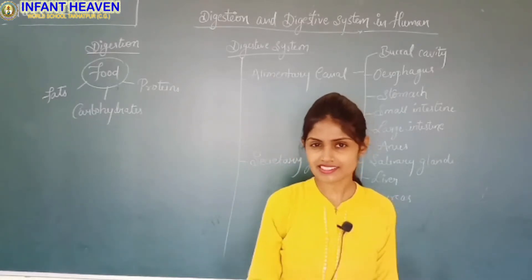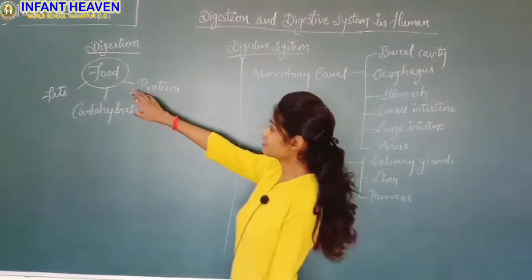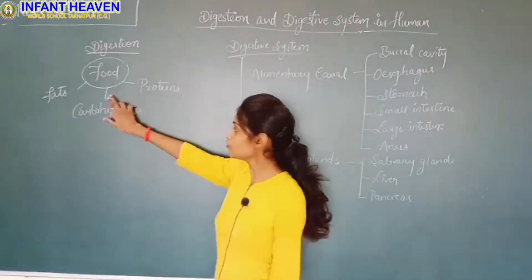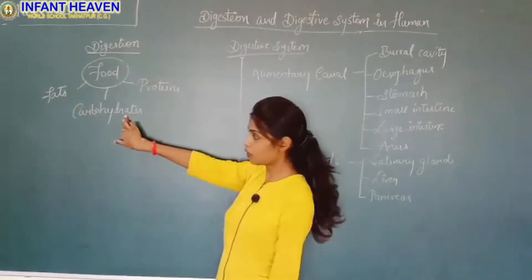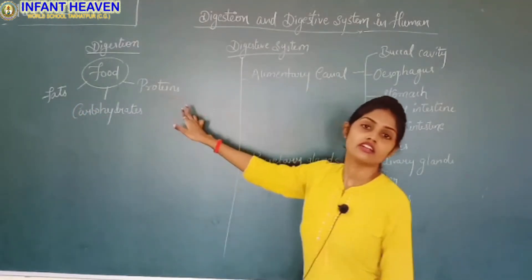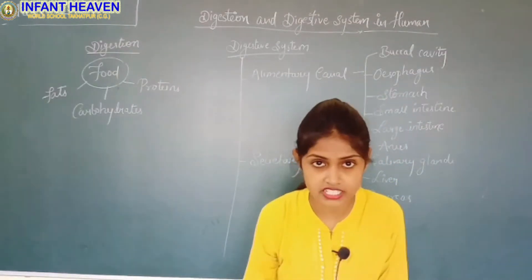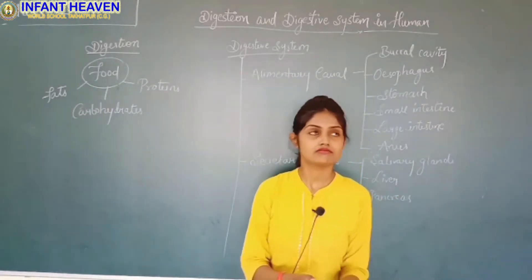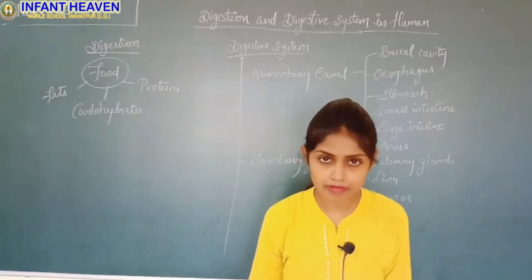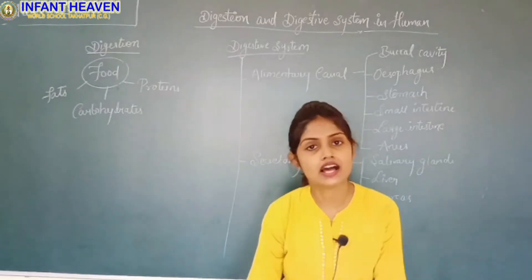Let us understand in a more easy method. Here we can see that food — what is it made up of? It is made up of fats, carbohydrates and proteins. We take food, it undergoes through our mouth or buccal cavity. It gets broken down into simpler substances and flows through our bloodstream and is transferred to all the parts of the body.